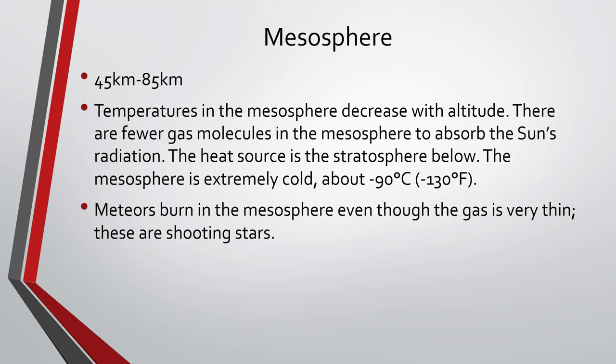The mesosphere is 45 kilometers to 85 kilometers. The temperatures in the mesosphere decrease with altitude. There are fewer gas molecules in the mesosphere to absorb the sun's radiation, and the heat source is the stratosphere below. The mesosphere is extremely cold — about negative 90 degrees Celsius or negative 130 degrees Fahrenheit. Meteors burn up in the mesosphere even though the gas is very thin, and this is actually where we get our shooting stars from.